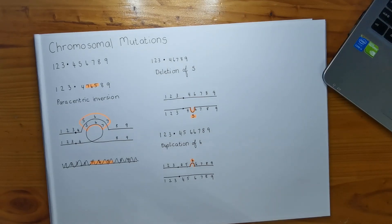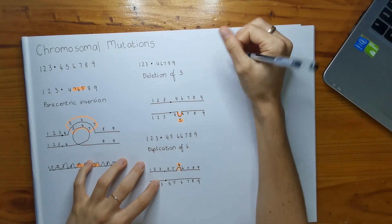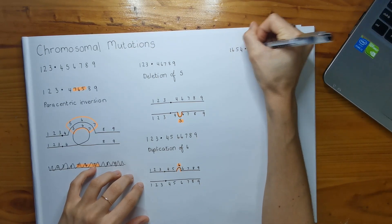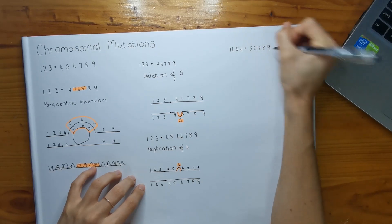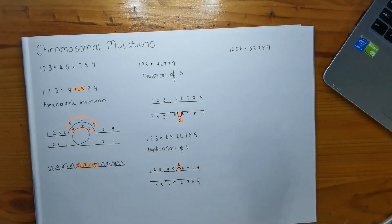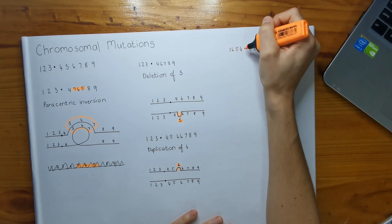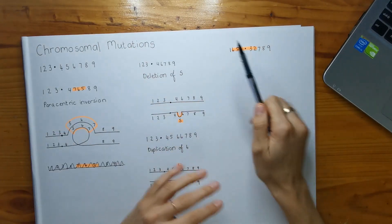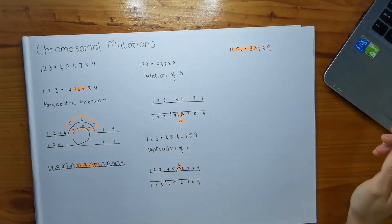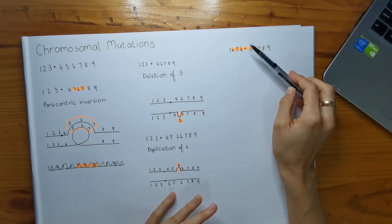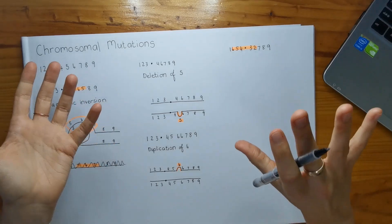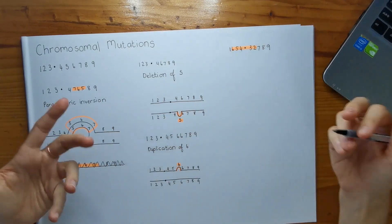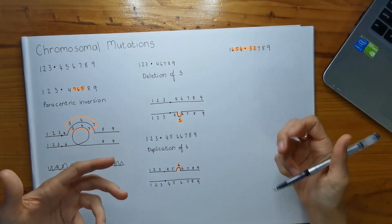This is part C, and it's interesting because it comes up a lot in tests - the pericentric inversion. The sequence is one, six, five, four, centromere, three, two, seven, eight, nine. We can see that six, five, four, centromere, three, two has been inverted - it's quite a big segment of that chromosome. If we swapped it around, it would be the normal sequence: one, two, three, four, five, six and so on. The centromere has been involved in this mutation - we know the two, three, four, five, six has been swapped around. So an inversion is occurring, but because the centromere is included, it's going to be a pericentric inversion.